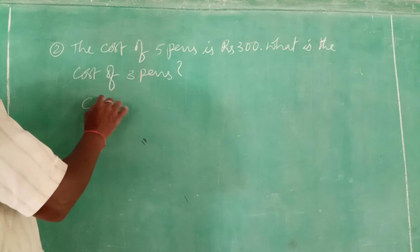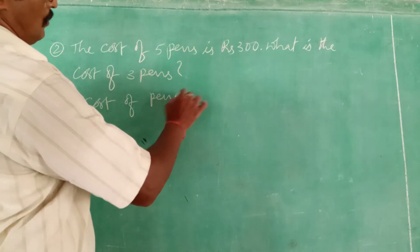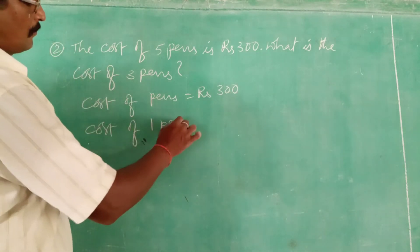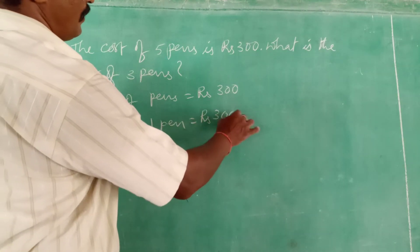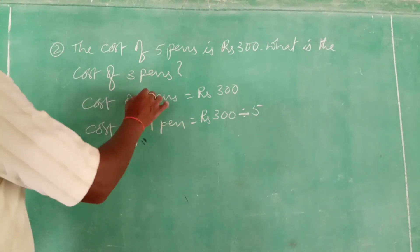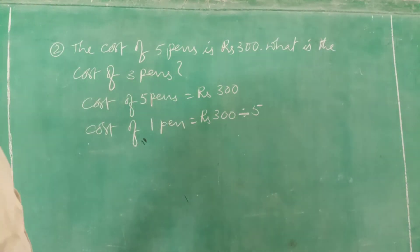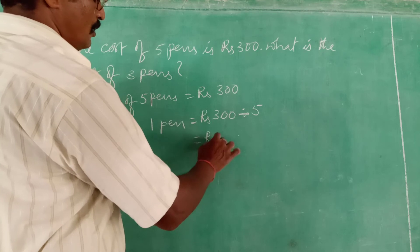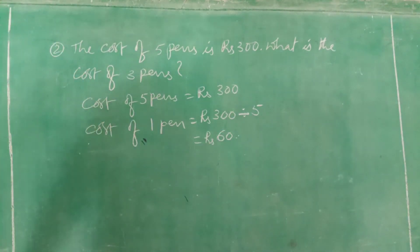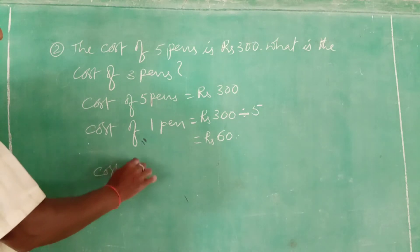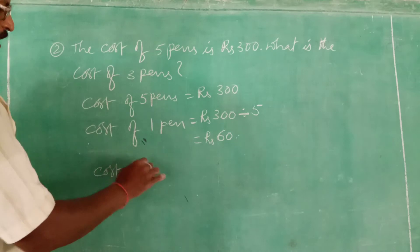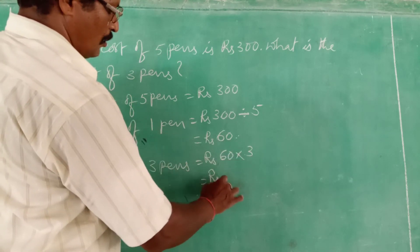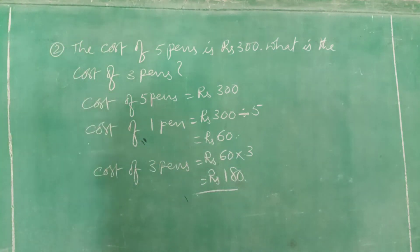Solution: Cost of 5 pens = Rs. 300. Cost of 1 pen = Rs. 300 divided by 5, which equals Rs. 60. So the cost of 1 pen is Rs. 60. Now cost of 3 pens = Rs. 60 into 3, equal to Rs. 180.